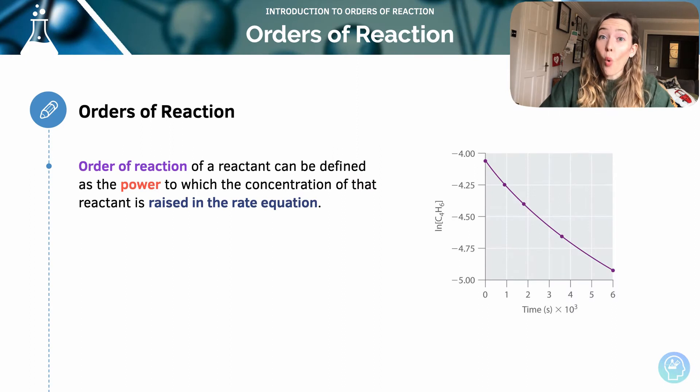The orders of reaction show how the rate of the reaction depends on the concentration of each of the reactants. To find the total order of a reaction, we need to add up the powers, which I introduced in the last session.